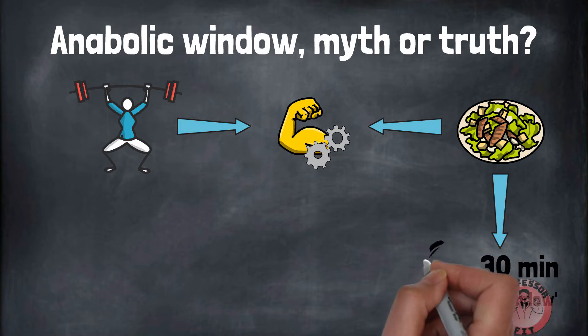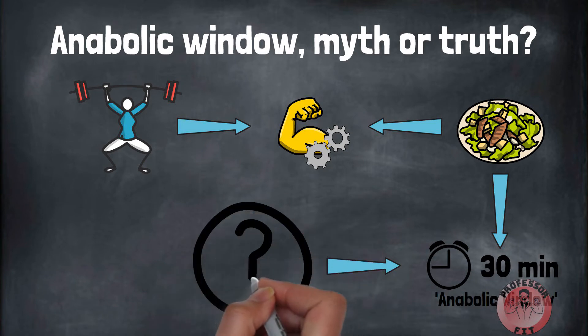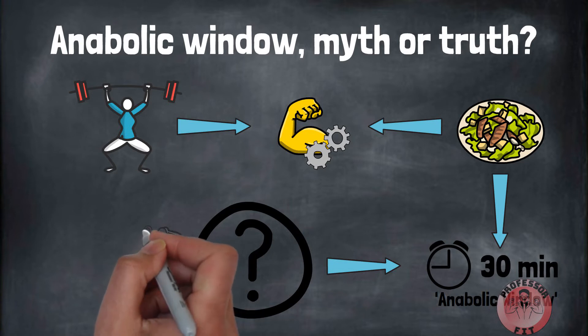Allegedly, the anabolic window lasts 30 minutes. If you want maximum results, you should consume protein and carbs within this time frame. Eating a meal after these 30 minutes is supposedly less helpful. Many people use this concept to practice precise nutrient timing. As it turns out, there's little scientific proof to back the strategy. Listen on to learn about the anabolic window theory and why it doesn't exist.